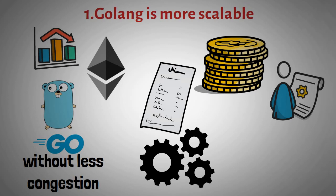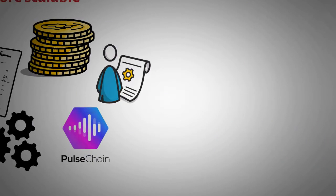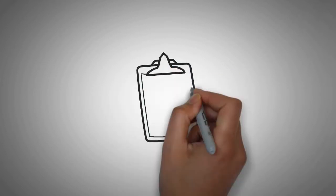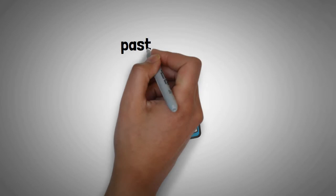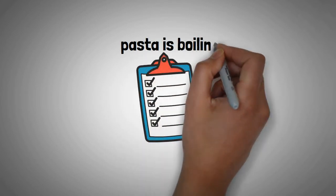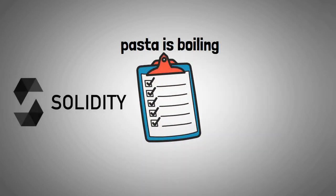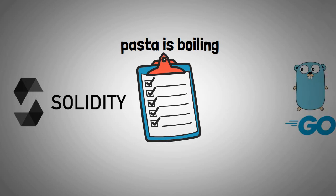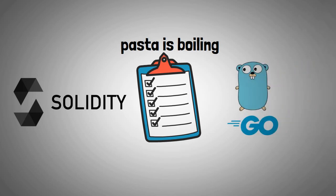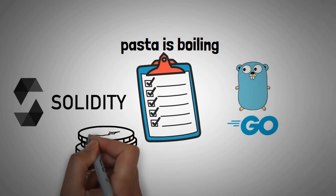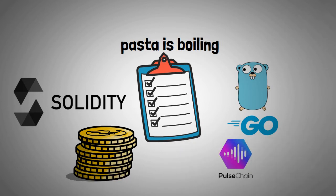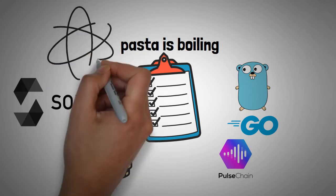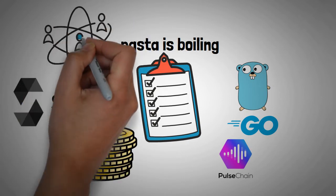Golang can also improve the scalability of PulseChain because it has built-in concurrency. Concurrency simply means that multiple tasks can be carried out at the same time. For example, if you are cooking a meal, you can be chopping vegetables while the pasta is boiling. This is something that Solidity cannot do as well as Golang. With Golang, multiple tasks can be carried out simultaneously, which means that more transactions can be processed at the same time. Since PulseChain has this feature built into its network, it would be able to handle a lot more transactions than Ethereum can.